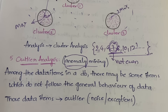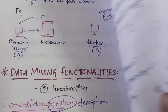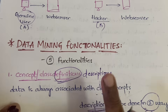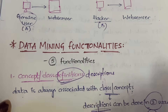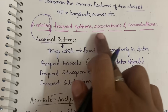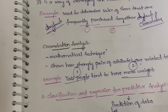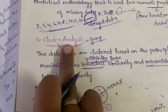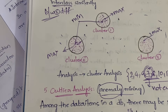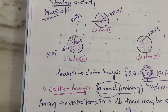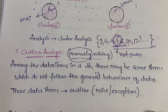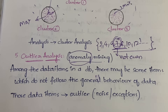So this is all about the five functionalities of data mining: concept or class descriptions, mining frequent patterns associations and correlations, classification and regression for predictive analysis, cluster analysis, and outlier analysis. Let's meet in the next video with another topic — till then, stay tuned to my channel.